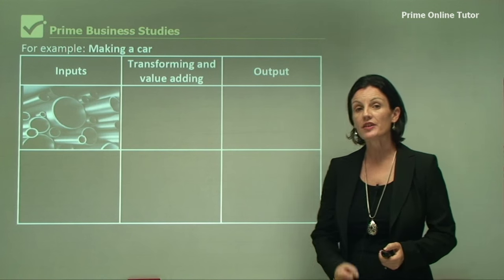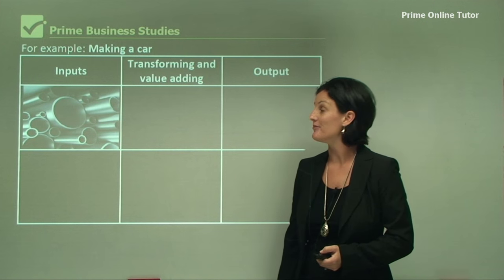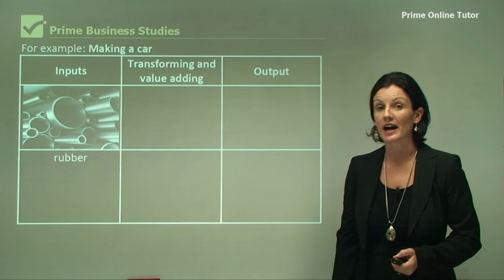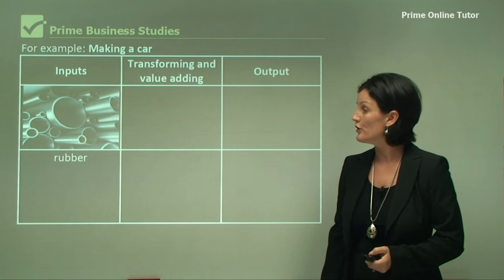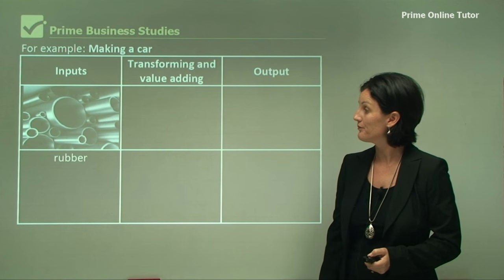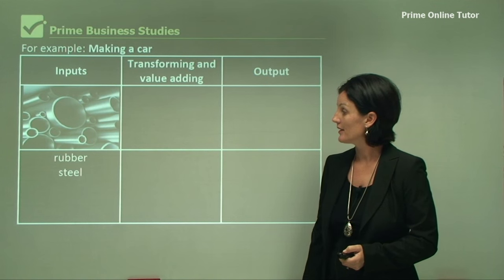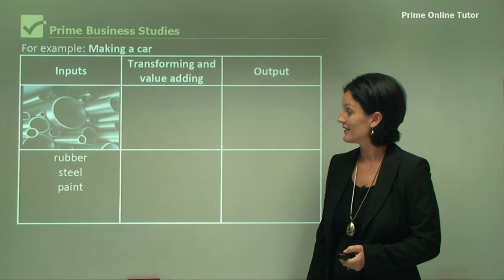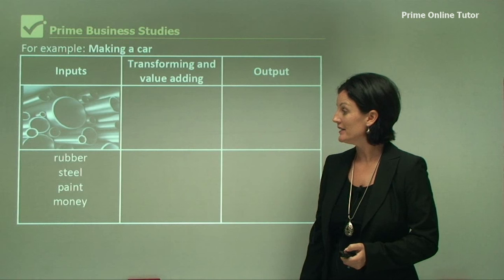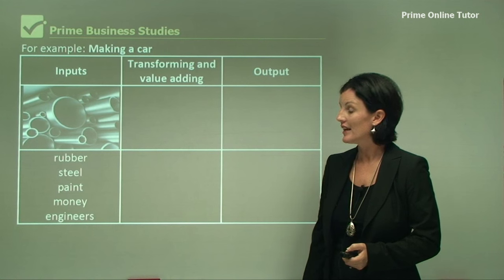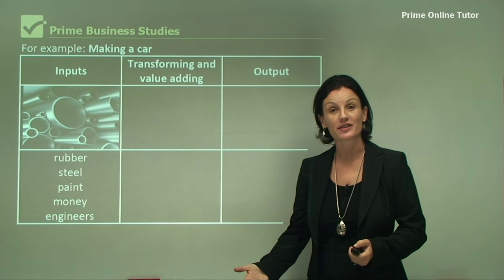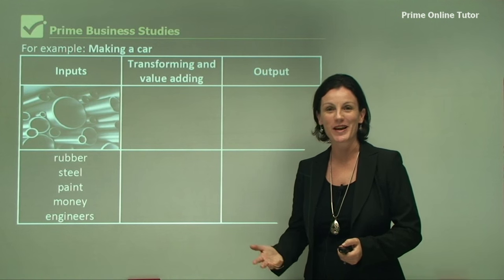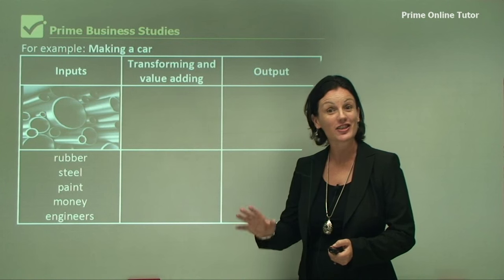Here we have an example of making a car. Our inputs for making a car include rubber, steel, paint, money, and engineers. There are a lot more inputs into making a car — these are just a few.